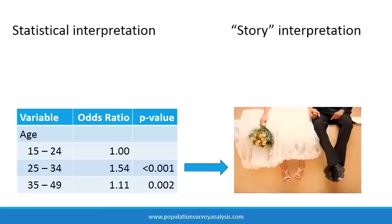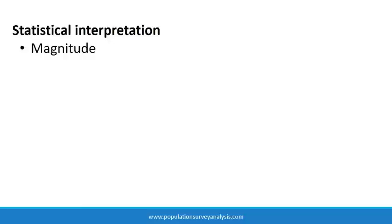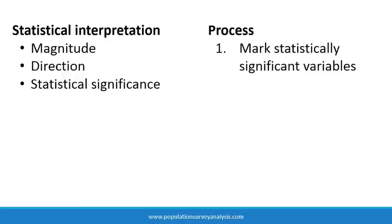If you are new to analysis, here is a process you can use to discover the story in your results. In quantitative analysis, results are expressed in terms of magnitude, direction, and statistical significance of association. So organize the results accordingly. With your regression table in front of you, do the following. First, mark the variables in the final table that were statistically significant.